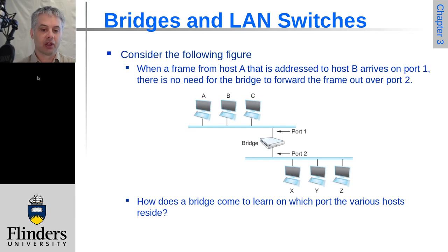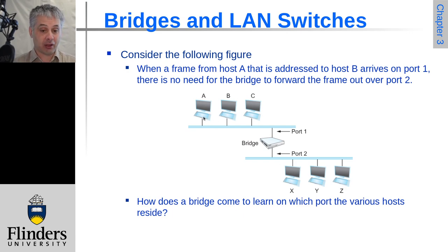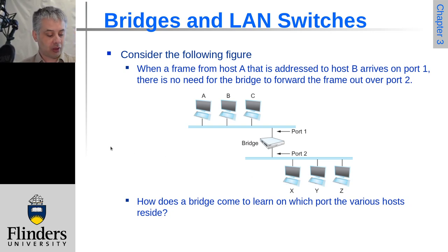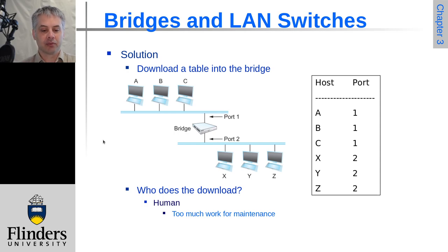If we have a bridge with hosts A, B, and C on one Ethernet and X, Y, and Z on the second one, traffic from A to C shouldn't go over the bridge, and traffic from X to Z or X to Y doesn't need to cross either. But traffic from X to A, A to Y, C to Z, or C to X does need to go over. The simplest approach is a fixed table in the bridge — it can know that hosts A, B, C are on port one and X, Y, Z are on port two.